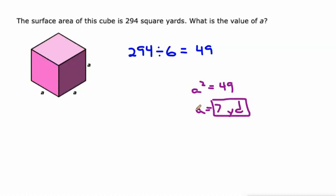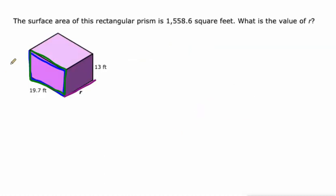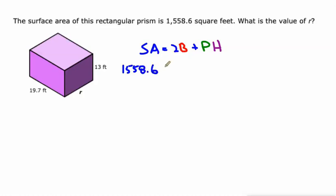Not too bad with a cube, and I got to do one more. I'm at my time limit here. I'm going to go back to using my formula: surface area equals two times the area of the base plus the perimeter of the base times the height of the prism. We are given the surface area this time, 1558.6.